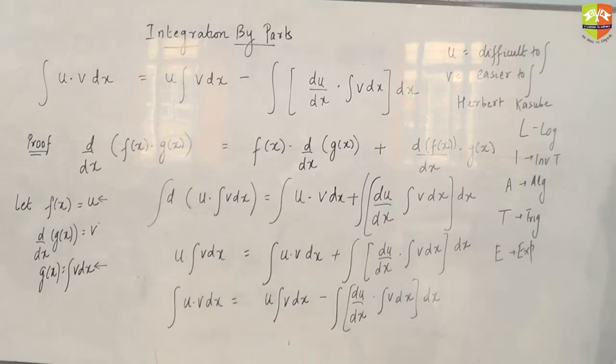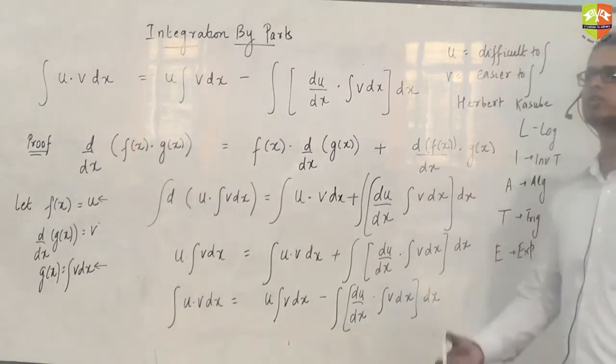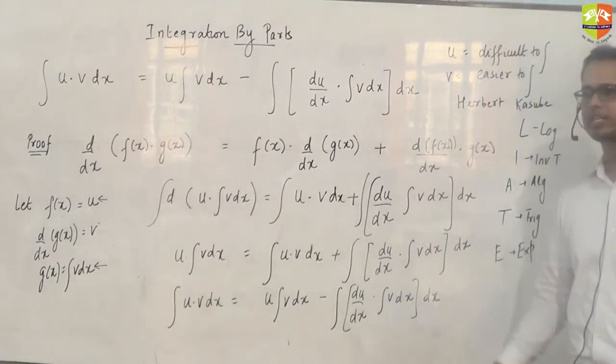L is the logarithmic function, I is the inverse trig function, A is the algebraic function, T is the trig function and E is the exponential function. Both L and I are difficult to integrate so it doesn't matter if the order changes between them.